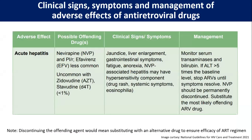Acute hepatitis can be caused by nevirapine, boosted PIs, and less commonly by efavirenz; it is very uncommon with zidovudine. Clinically, acute hepatitis presents with jaundice, liver enlargement, GI symptoms, and anorexia. Nevirapine-induced hepatitis may have a hypersensitivity component with drug rash and systemic symptoms. For management, we monitor transaminases and bilirubin. If ALT is more than five times the baseline, we stop ARVs until symptoms resolve; nevirapine should be permanently discontinued and substituted with the most likely offending ARV drug.